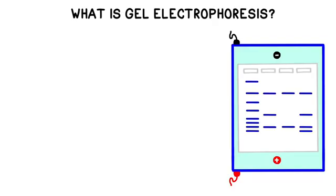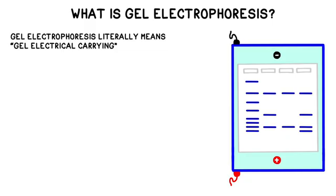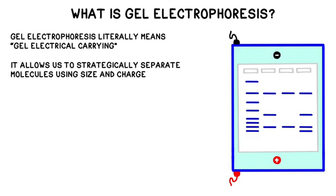The name gel electrophoresis gives us a clue about what it does. The name itself means gel electrical carrying. In general, gel electrophoresis is a process by which molecules in a sample are strategically separated and sorted using their size and charge.